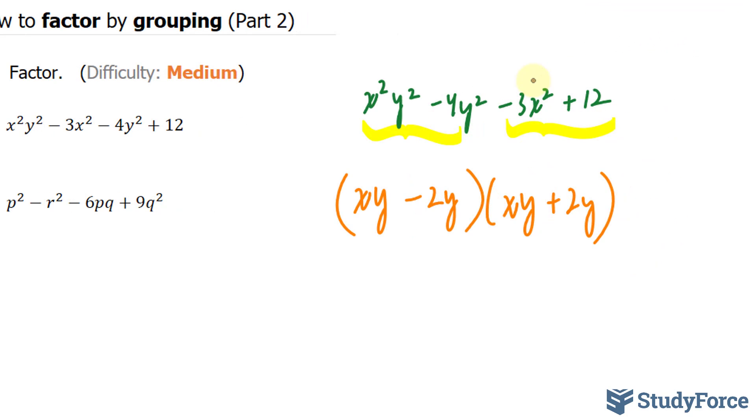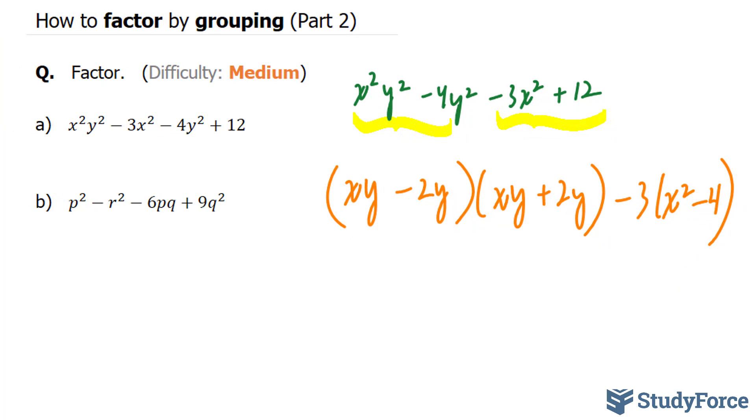For this group, I factored out negative 3, leaving us with negative 3 times x squared minus 4. I knew I could do better, so I tried again.